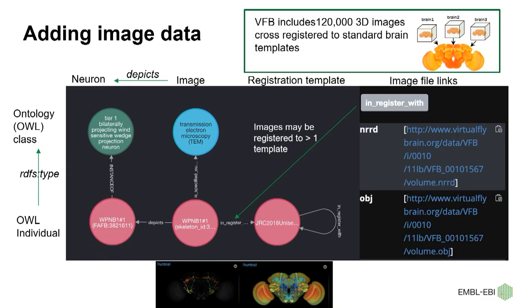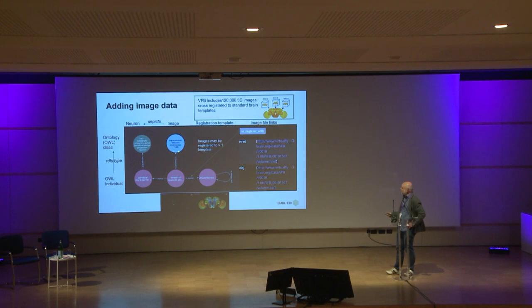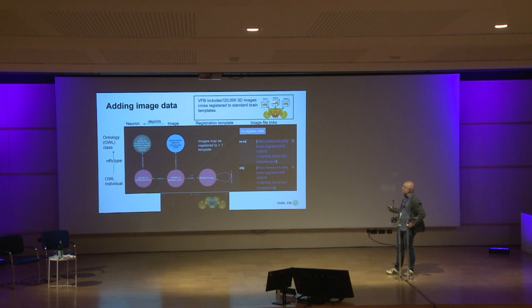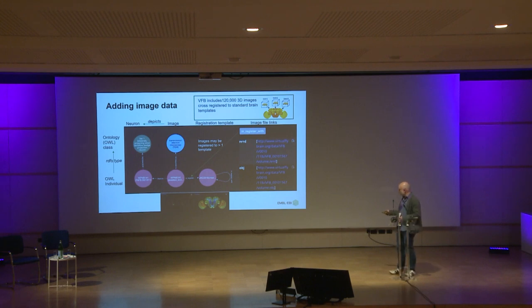Here are some examples of how data is added using TSVs. There's a neuron class in the ontology and an instance of that neuron type from a connectome. We also have a class for the image — the image type is transmission electron microscopy — and an instance of that, with a simple 'depicts' relationship. In the database we have over 120,000 3D images but only a few brains, so there's lots of cross-registration onto the same standard template, and we need to record that registration. Some images are registered to more than one template, and on the edge we record links to the actual files and further file information.